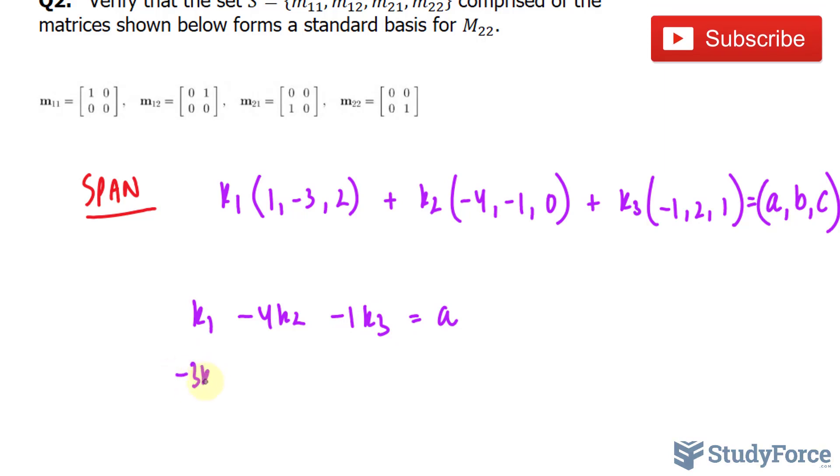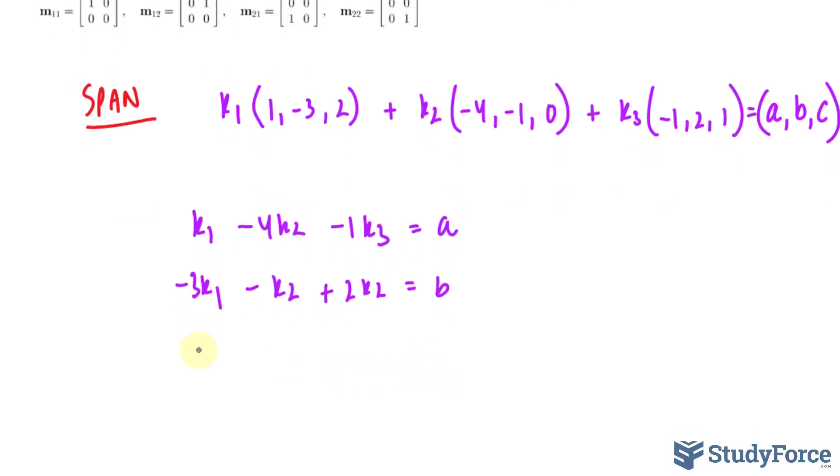You should end up with -3k sub 1 minus k sub 2 plus 2 times k sub 3 is equal to b. And lastly, 2 times k sub 1 plus 0 plus k sub 3 is equal to c.